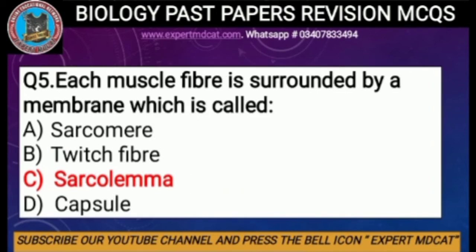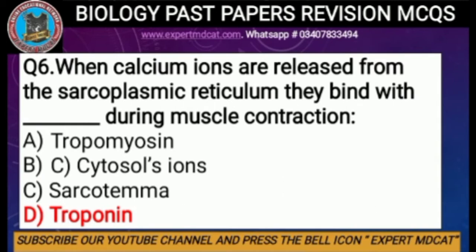Question five: each muscle fiber is surrounded by a membrane which is called — options are sarcomere, twitch fiber, sarcolemma, or capsule. The correct option is C, sarcolemma, because the membrane of a muscle cell is called sarcolemma.